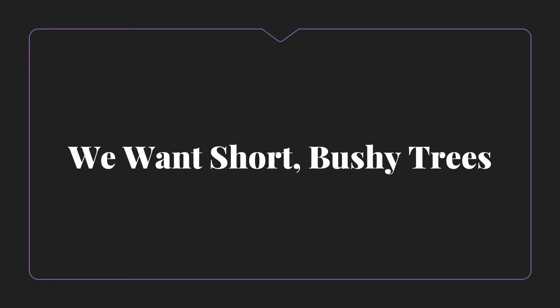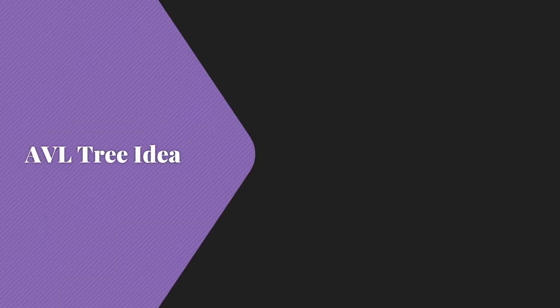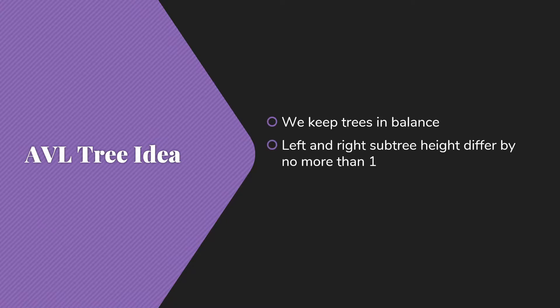So how are we going to get them? Well, with AVL trees, the idea is that we're going to keep our trees in balance. The left and right subtree height are going to differ by no more than one. Plus, we're going to guarantee that the left and right subtrees are AVL trees.